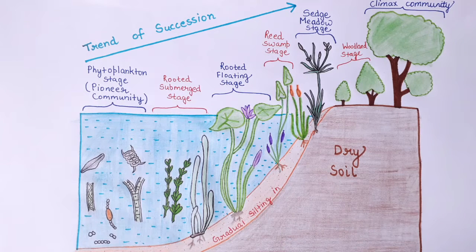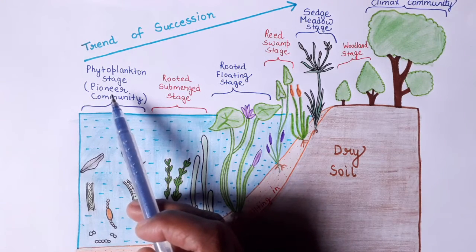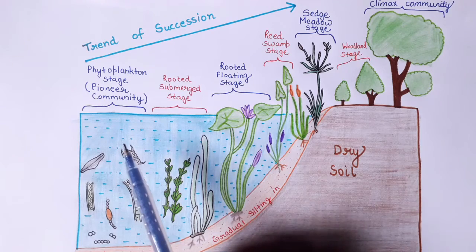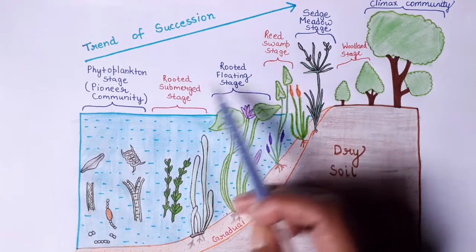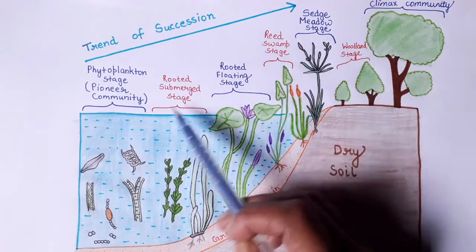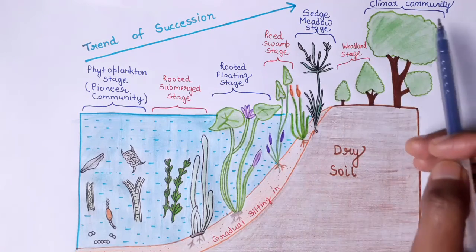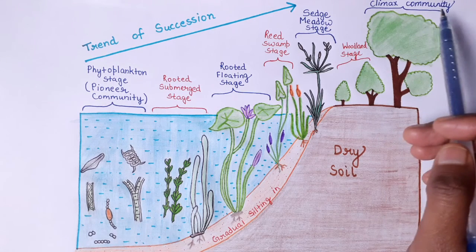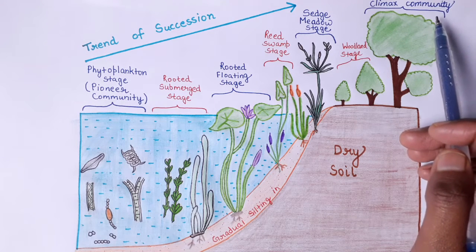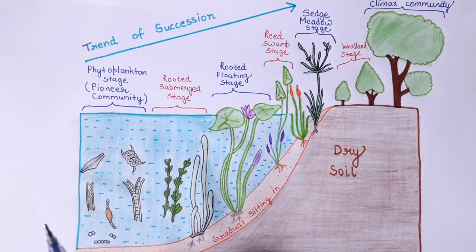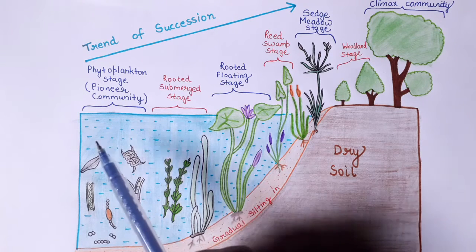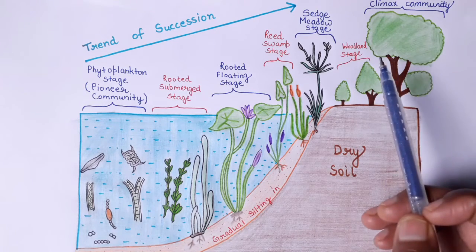That process is called succession. In the process of succession, there are three types of communities involved. The first is the pioneer community, regarded as the first biotic community present on the bare area. The second are the seral stages or seral communities, which are intermediate stages within the process. The final community is the climax community, which is the final stable community of the process of succession.